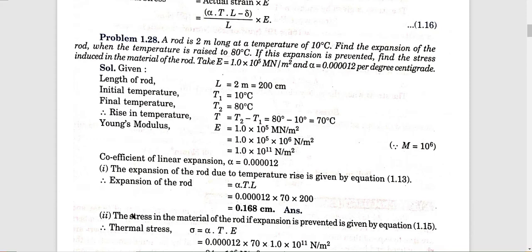Problem 1: A rod of 2 meters long at a temperature of 10 degrees Celsius. Find the expansion of the rod when the temperature is raised to 80 degrees Celsius. If this expansion is prevented, find the stress induced in the material. The rise in temperature T equals T2 minus T1 equals 80 minus 10 equals 70 degrees Celsius.